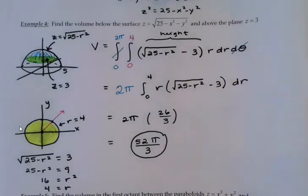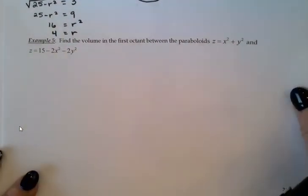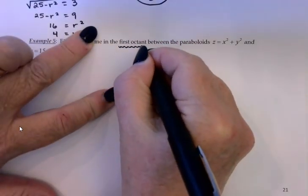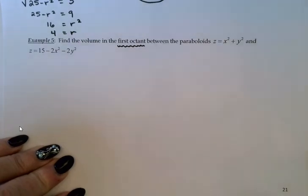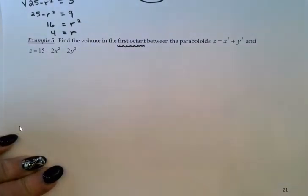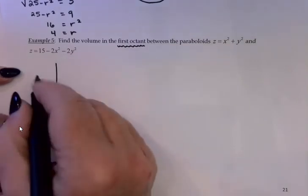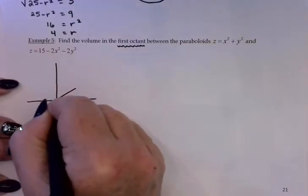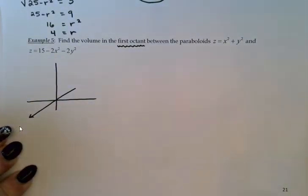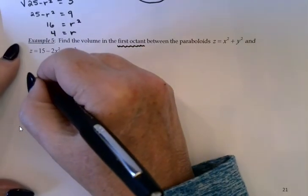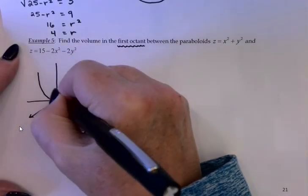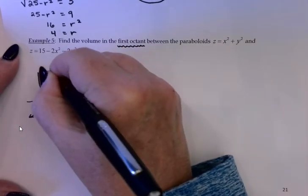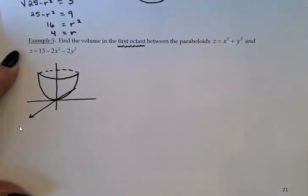All right, let's take a look at another volume problem. In example 5, we want the volume just in the first octant. I'm going to be careful with that because that's new. Between those two paraboloids, z equals x squared plus y squared and z equals 15 minus 2x squared minus 2y squared. Again, I think I can kind of guess what this one looks like. We'll verify with technology, but I'm going to try to sketch first this time. z equals x squared plus y squared, that's just our standard paraboloid with its vertex at the origin. This one, 15 minus 2x squared minus 2y squared, it's upside down because of the minuses, and then shifted up 15.